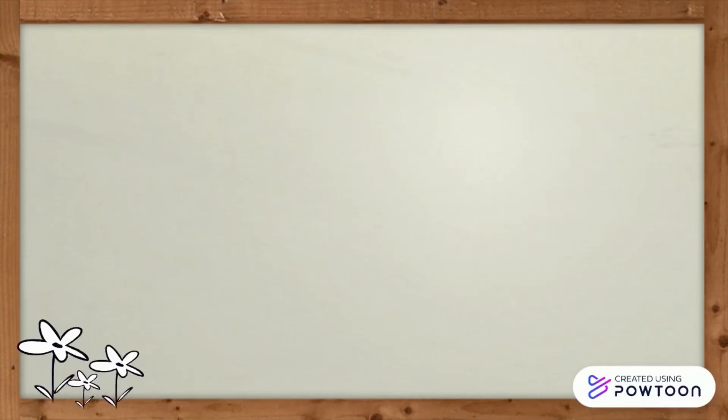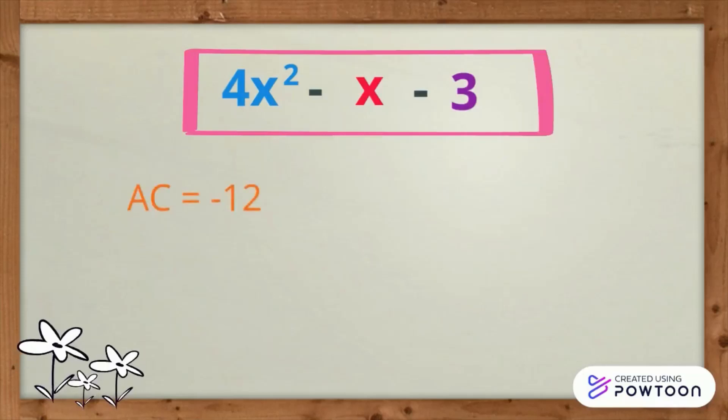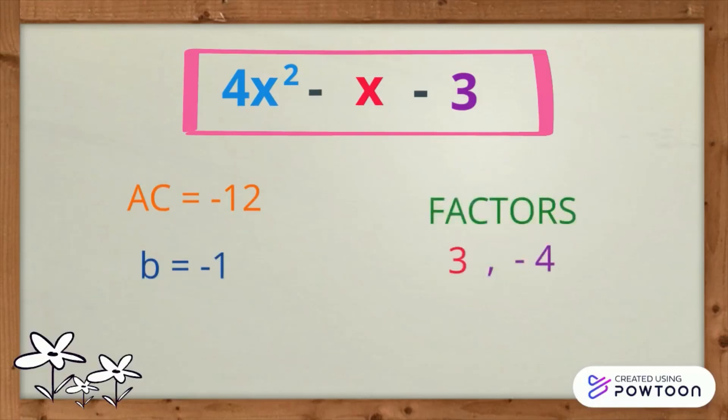Let us check this one. 4x squared minus x minus 3. AC is negative 12. B is negative 1. The set of correct factors are 3 and negative 4 that when added equals negative 1.